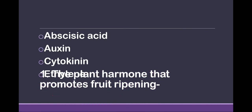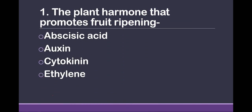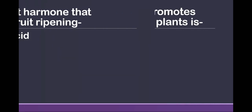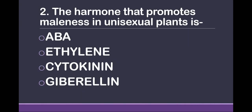Question 1: The plant hormone that promotes fruit ripening. Options are: abscisic acid, auxin, cytokinin, ethylene. The answer is ethylene.